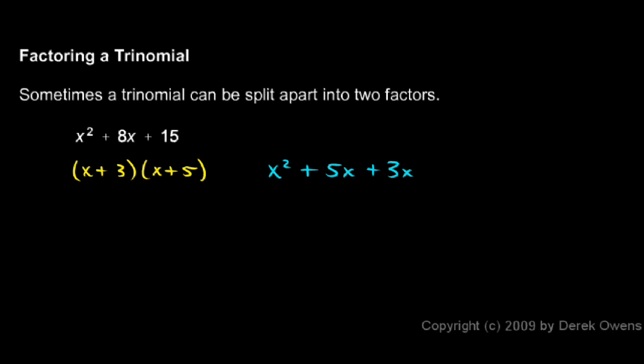And then the last terms, the 3 times 5, gives us the 15. And notice how this works: these two numbers, the 3 and the 5, show up there and add up to 8, and then they end up in the last part getting multiplied.